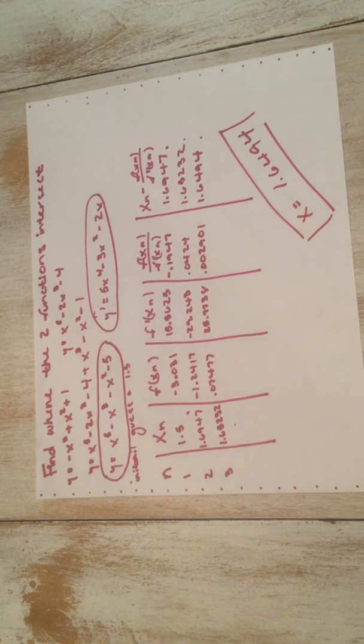Starting the table with an initial guess of 1.5, we plug 1.5 into the new subtracted function, then into f prime, divide the two, and subtract from xn. We carry that result down for the second iteration and repeat, then go down one more step for the third iteration. After completing three iterations, we get the answer 1.6494, meaning the two functions intersect at x equals 1.6494.